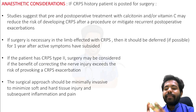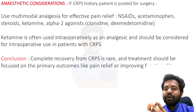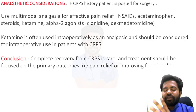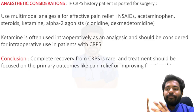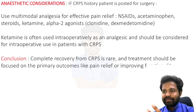Multimodal analgesia is effective for pain relief in these patients, including NSAIDs, acetaminophen, steroids, ketamine, and alpha-2 agonists like clonidine and dexmedetomidine, which also have an analgesic role in CRPS. Ketamine is often used intraoperatively as an analgesic and should be considered for intraoperative use in patients with CRPS.